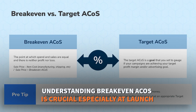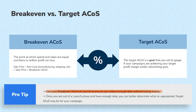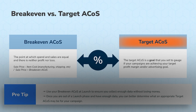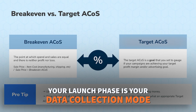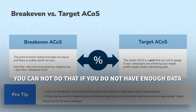The pro tip here: use break-even ACoS at launch to ensure you collect enough data without losing money. When you launch your campaigns it is super important to be collecting data. If you don't do this calculation, you might just go with 100% ACoS at the beginning — that's a simpler approach, but the goal is that you are collecting data at launch. The target ACoS should be a different calculation after you're out of the launch phase. Your launch phase is your data collection mode — it could be two weeks, three weeks, or ideally four weeks. That's when you have enough data to optimize and figure out what your target ACoS should be.